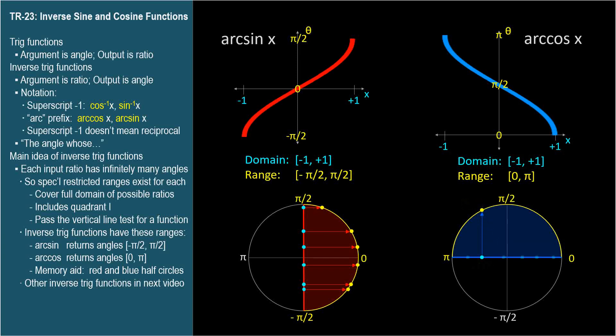For any arc cosine argument along the x-axis from negative 1 to 1, the angle returned is between 0 and pi radians, which corresponds to quadrants 1 and 2, the top half of the circle.